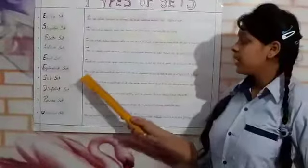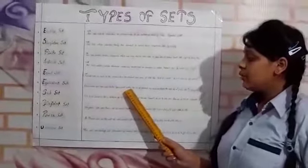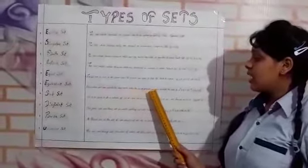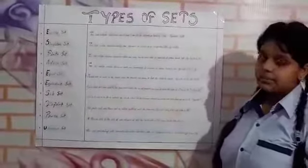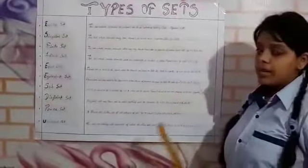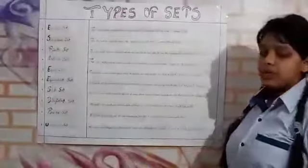Equivalent Set: sets are said to be equivalent when the number of elements are same in both the sets. For example, A = {1, 2, 3} and B = {3, 2, 9}.